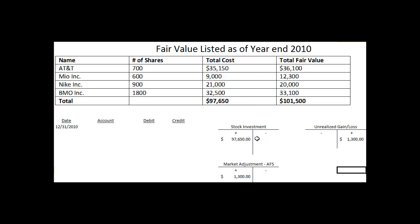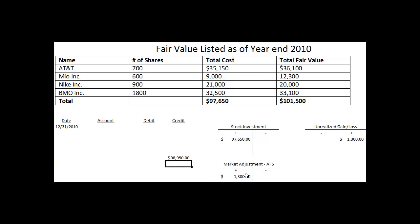Subsequently, in 2009, we had a fair market value adjustment of $1,300. So the total — when you add those two together — on our financial records for the stock investment is $98,950. You can't forget about this market adjustment account, the valuation account.